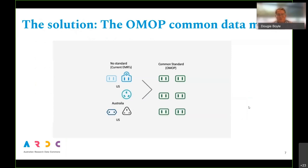The word 'common data model' — what you're looking at here are some different country plugs on the left, which visually represent what data is like across healthcare in Australia: it is all held in different formats. This project is to prove that we can convert this into one model. The model we've chosen is an international model — probably the most widely implemented common data model in the world — which is the OMOP Common Data Model. Feel free to look up OMOP online.